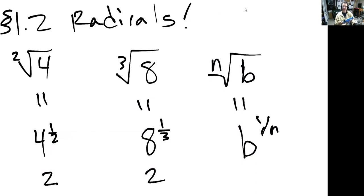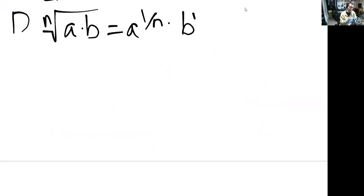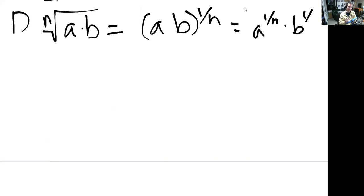Radicals have very much the same rules as the exponentials that we just looked at. So the first rule is if you have a radical, an nth root of a product, we can distribute the radical. Because as we already know, this is a to the one over n times b to the one over n.